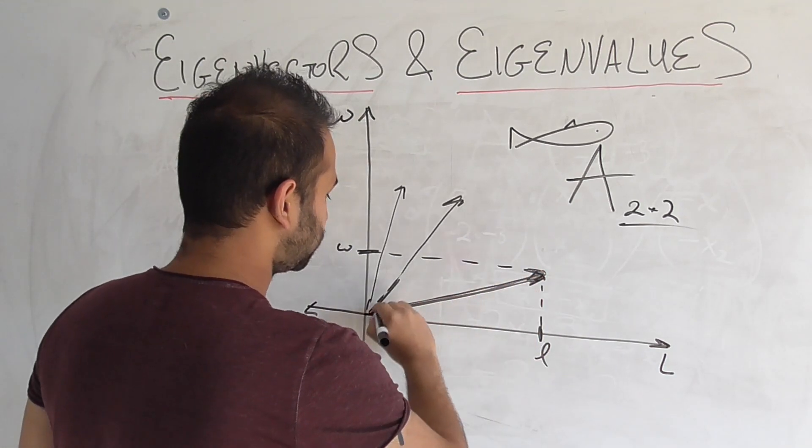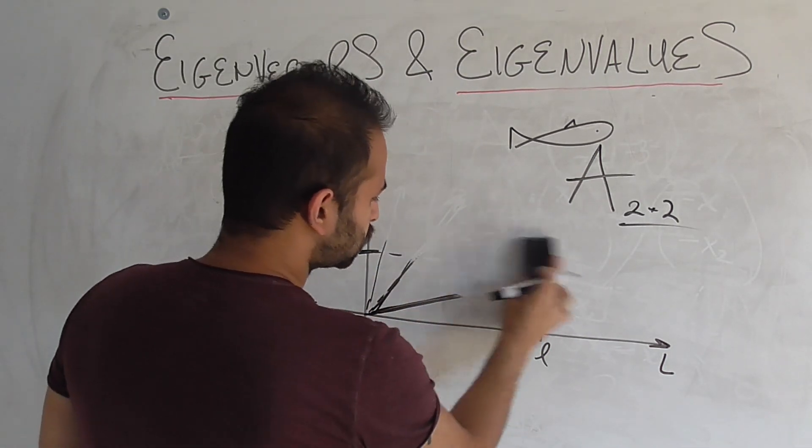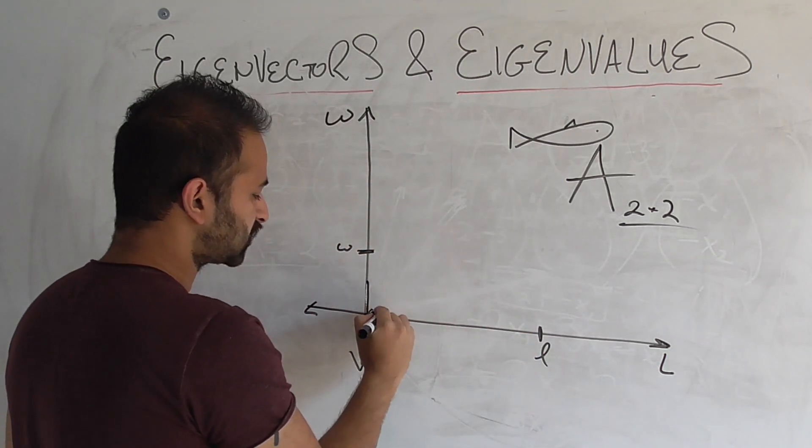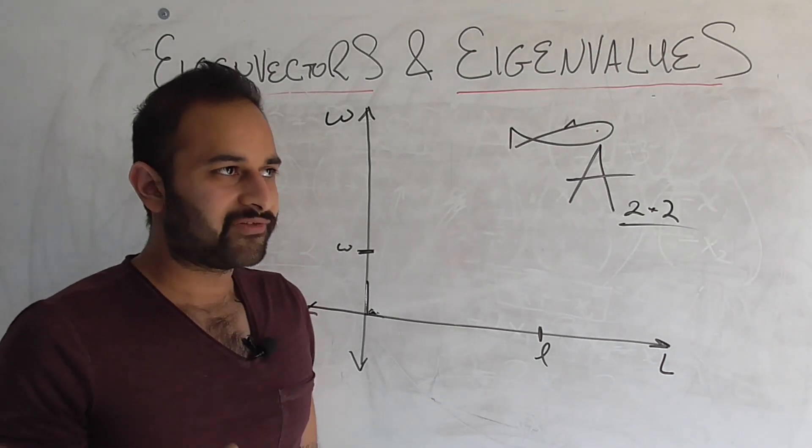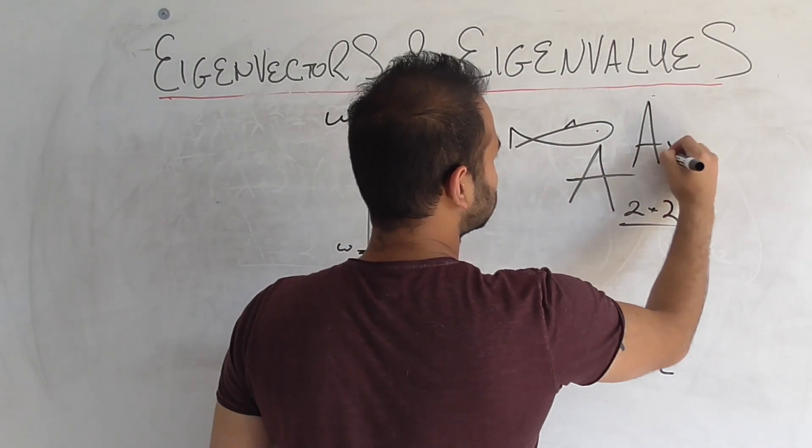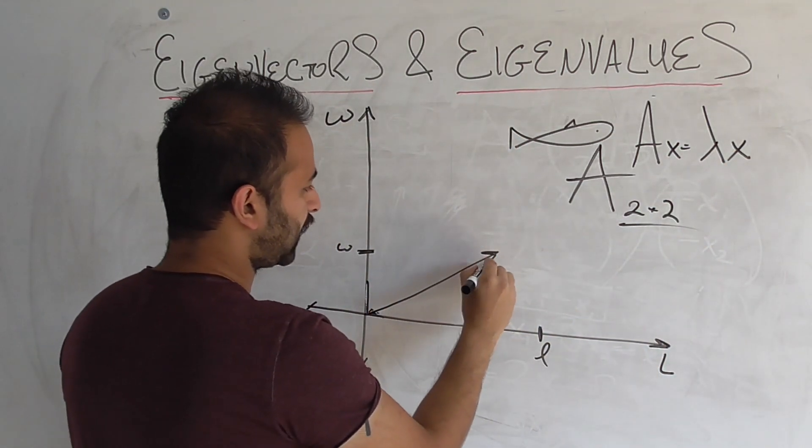So why is it important? Where do eigenvalues and eigenvectors come into play? Well, if we have an eigenvector in this context, we know that A times x is equal to some scalar multiple of x.